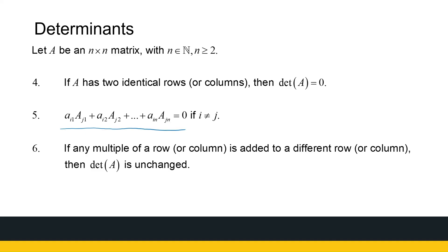Finally, if any multiple of a row or column is added to a different row or column, the determinant is unchanged. This should remind you of Gaussian elimination — adding a multiple of one row or column to another leaves the determinant the same. These are the key properties of determinants to keep in mind.